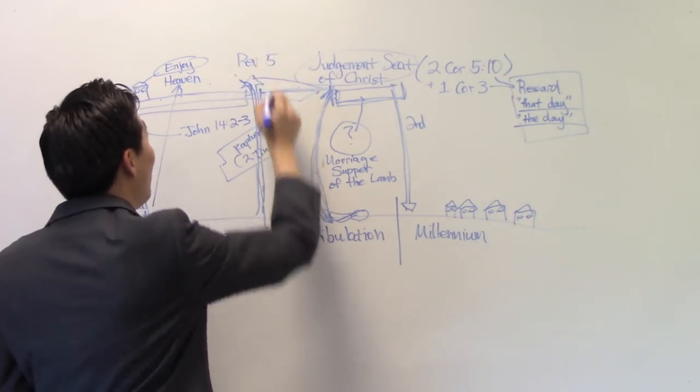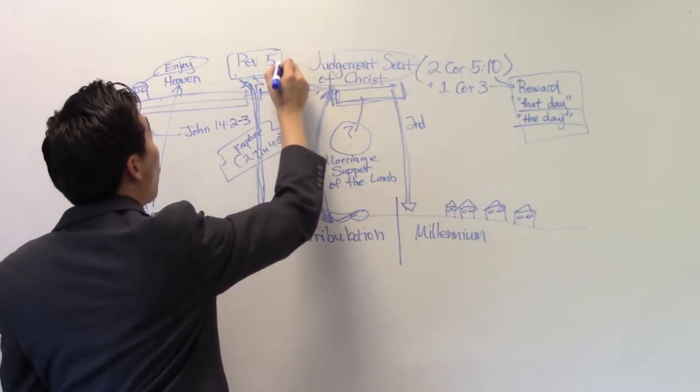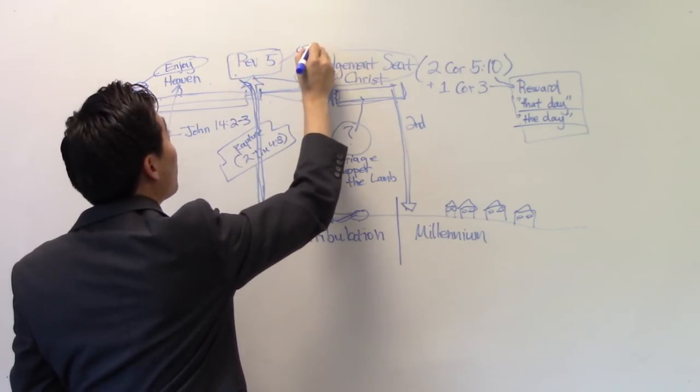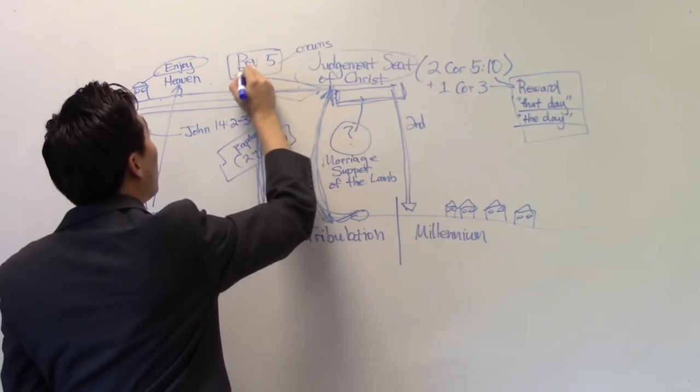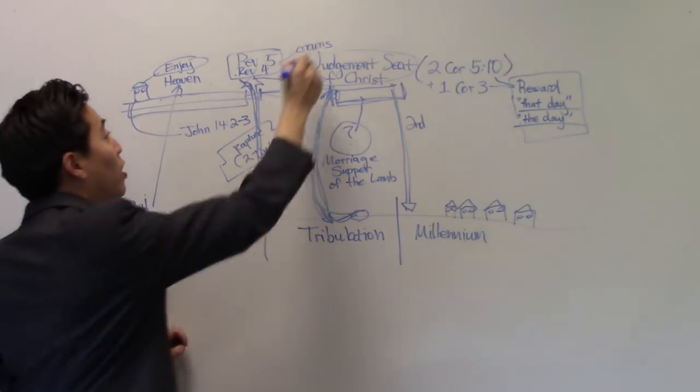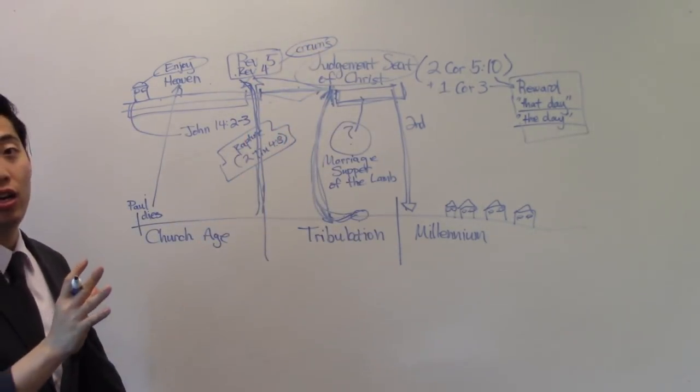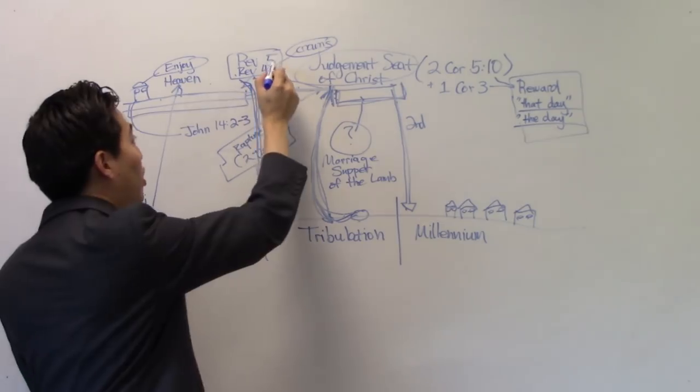And they sung a new song saying, Thou art worthy to take the book and to open the seals thereof. For Thou hast slain and hast redeemed us to God by Thy blood out of every kindred and tongue and people and nation. And hast made us unto our God kings and priests and we shall reign on the earth. So there's no doubt that's us saved Christians. Verse 8. If you look at verse 8, it mentions the four and twenty elders saying that. Now here's a point. Get ready for this.